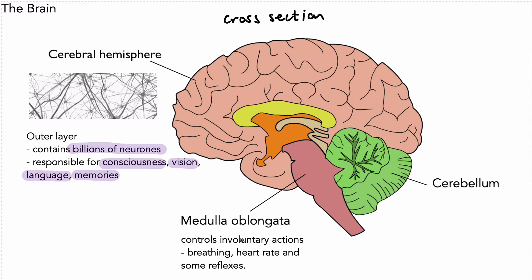The next part is the medulla oblongata. This controls involuntary actions — things like breathing, the beating of the heart, and some reflexes. One example of a reflex would be that of vomiting. So that's the medulla oblongata.